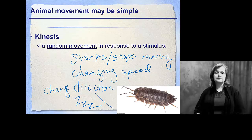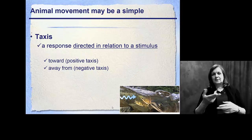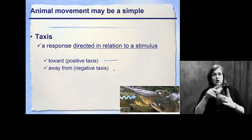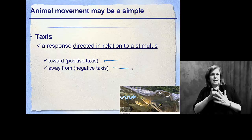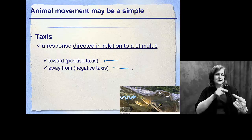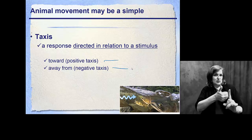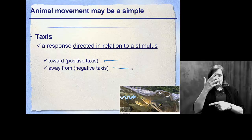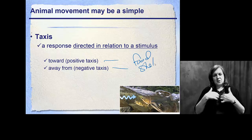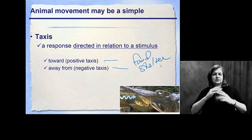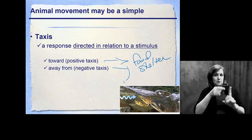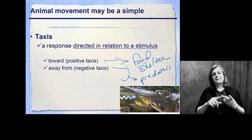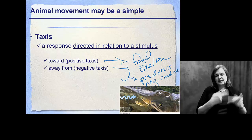These random movements are different than taxis. Taxis is a very directed response to something in the environment, either toward it or away from it. Moving toward the stimulus would be positive taxis; away from it, negative. The whole idea is trying to find the ultimate source — for many organisms, food, shelter, or anything else they need. You would move toward those things and away from predators or negative conditions in the environment.